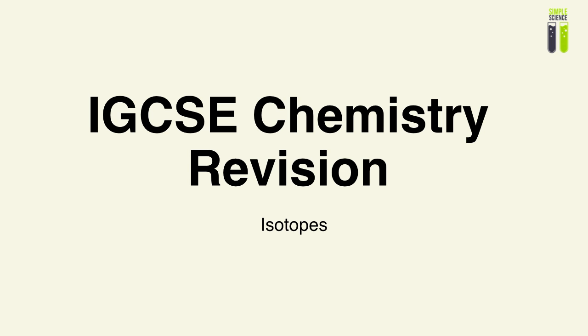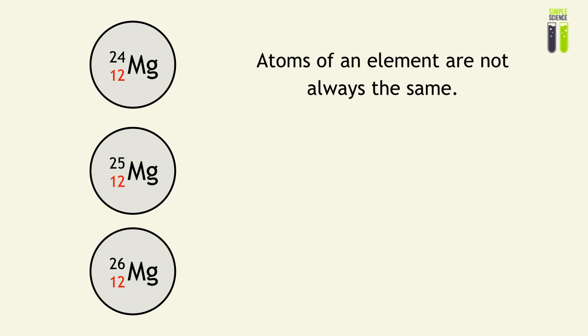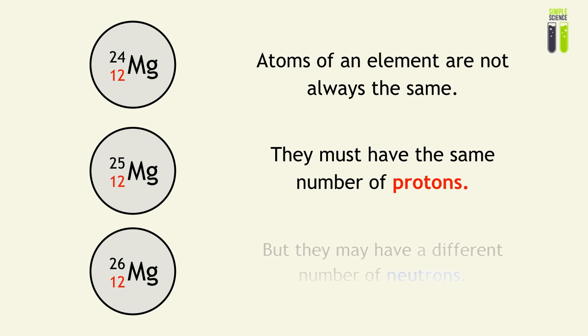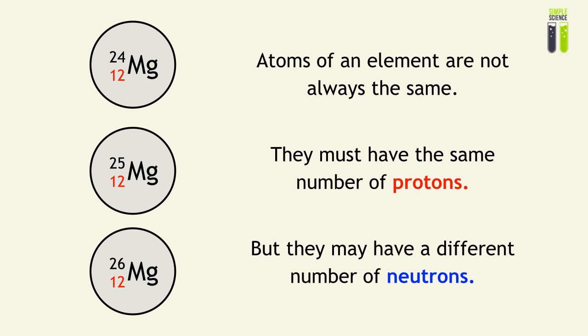Elements in this world exist as isotopes. Atoms of an element are not always the same. We know that if they are of the same element, they will have the same number of protons, but they are allowed to have a different number of neutrons and hence a different number of nucleons.